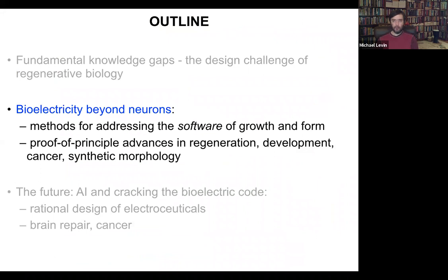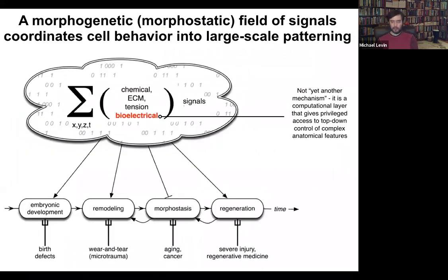We have started looking at something called developmental bioelectricity. All cells in vivo sit within this complex morphogenetic field of information that tells them what to do as part of a larger unit. This information comes in many flavors: chemical, extracellular matrix, tensions and stresses, biomechanics, and bioelectricity. I'm going to focus today on bioelectricity because it's not just another piece of physics you need to know to understand anatomy — it's actually a computational layer that gives privileged access to the control of complex anatomical features.